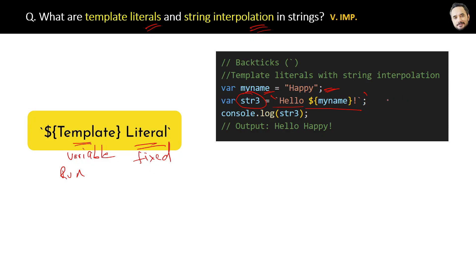As per string interpolation, the string inside the curly braces and preceded by the dollar sign will be considered as a variable, and the value of this variable will be evaluated at runtime. So the final output of this template literal is hello happy.